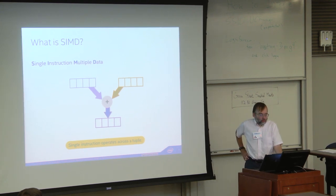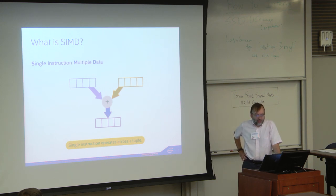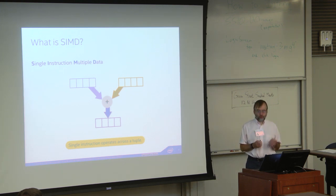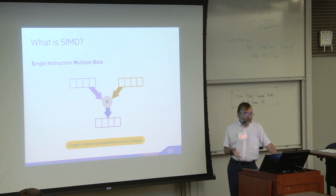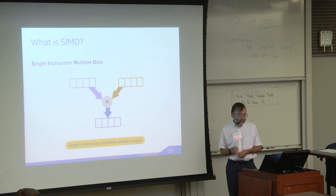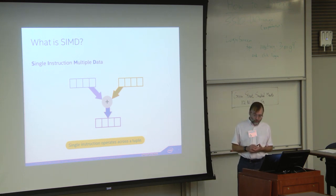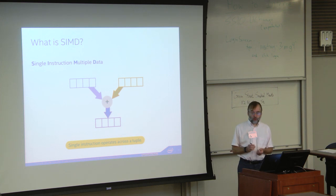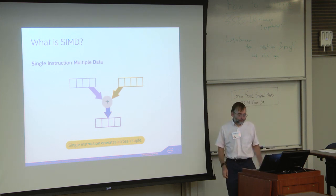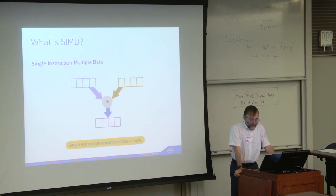SIMD stands for Single Instruction, Multiple Data. It describes how a single instruction operates on multiple elements of data — like doing element-wise operations on vectors, or from the Julia viewpoint, operations on tuples element-wise. Most modern hardware has SIMD units. Intel processors have had SSE (128-bit wide SIMD) for a long time, now AVX at 256 bits wide, and Xeon Phi and the coming AVX-512 have 512-bit. ARM has Neon, Power architecture has AltiVec, and more recently VSX.